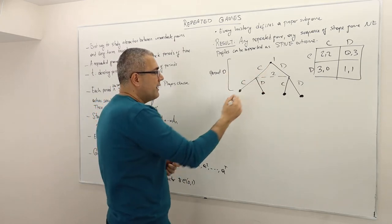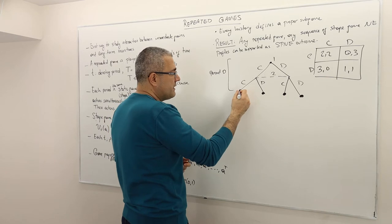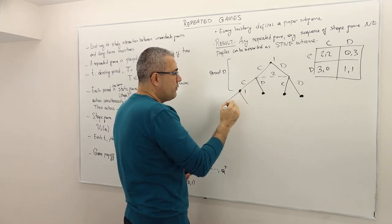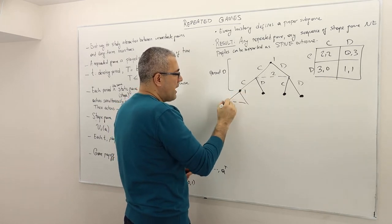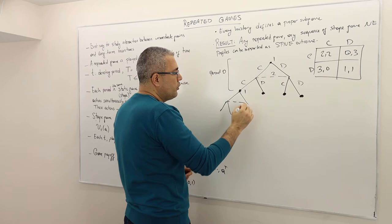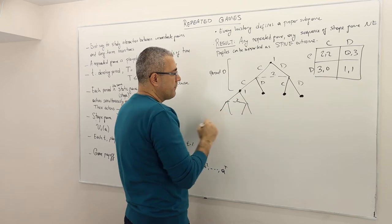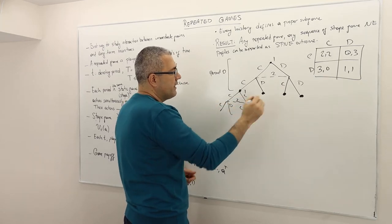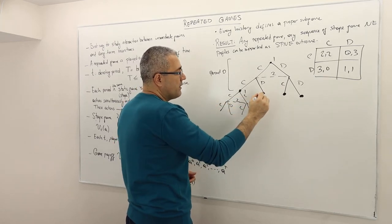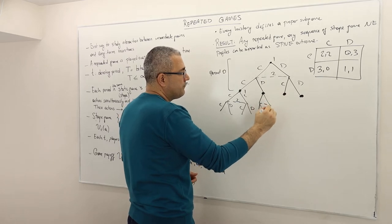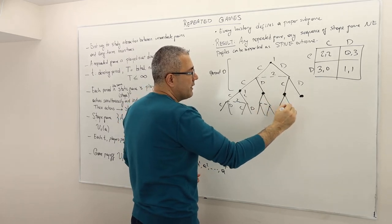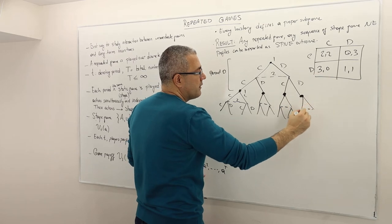After each possible history, once again player one moves, and then player two moves again. They choose C or D. And the same structure repeats for each of the four histories.